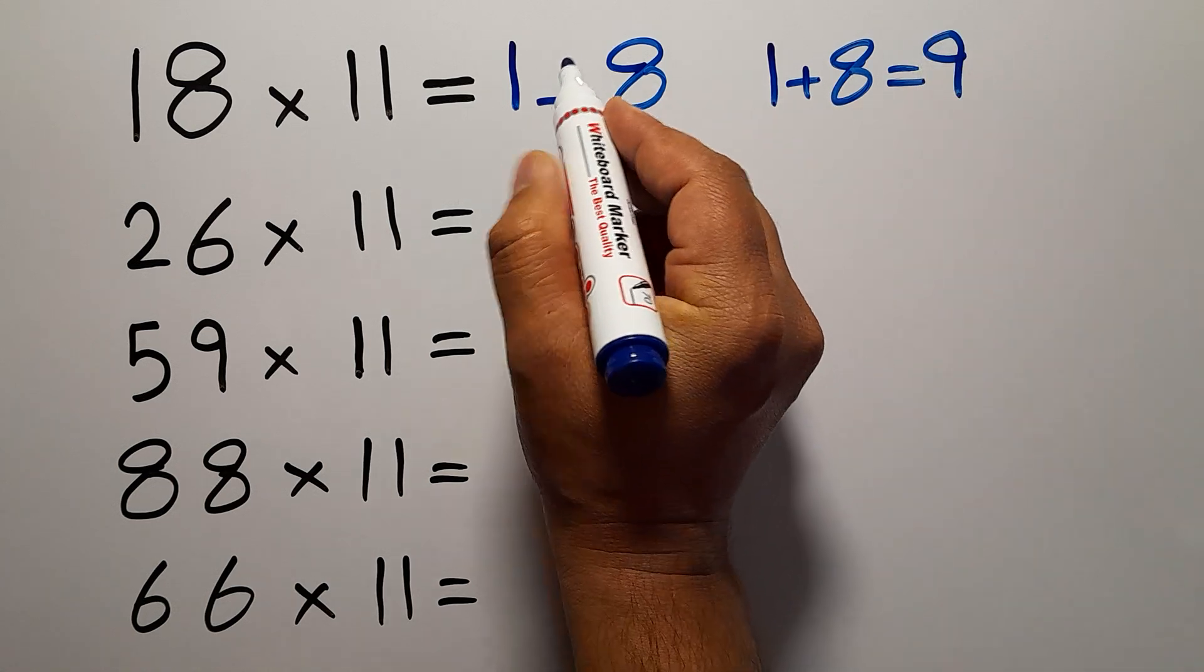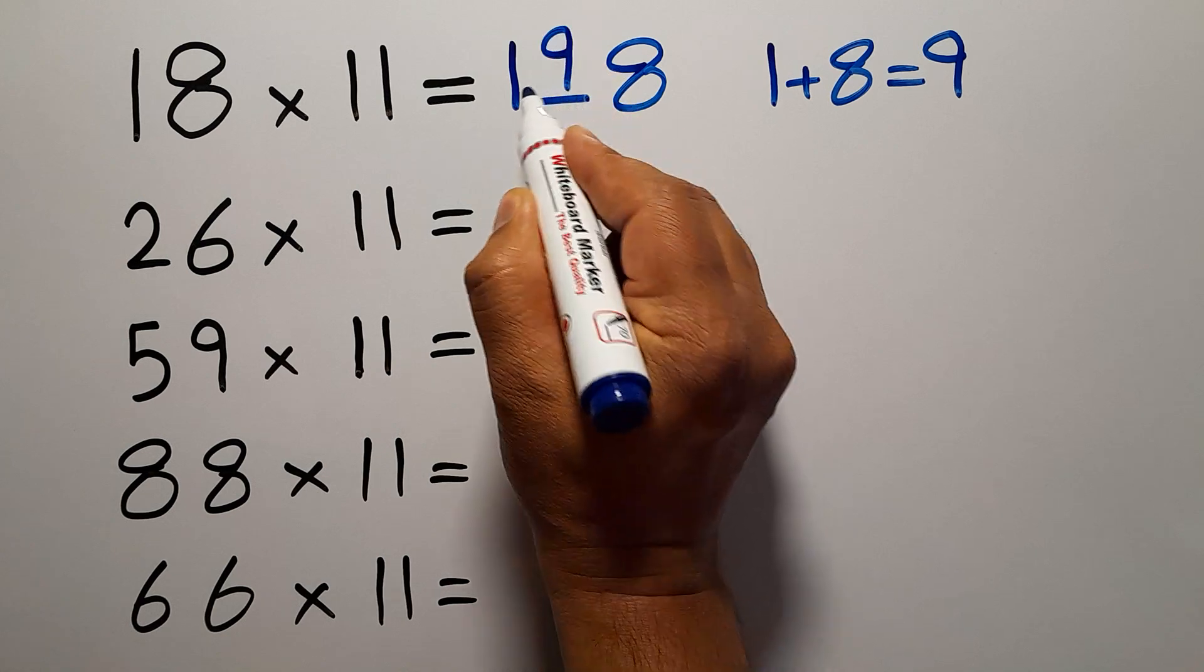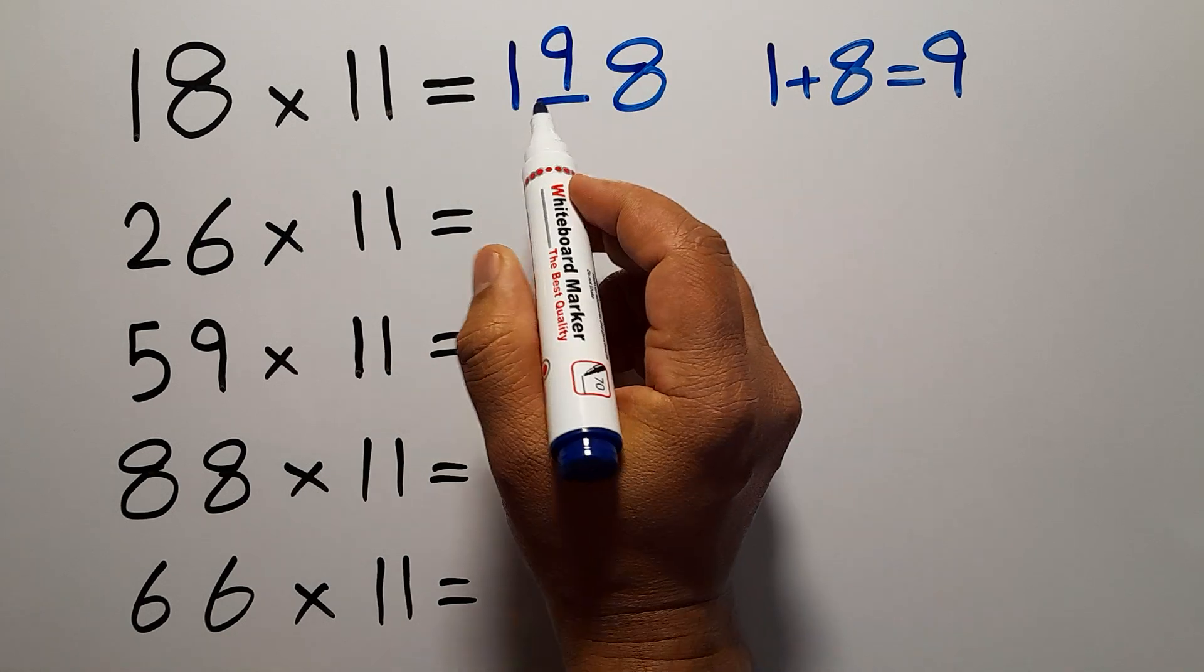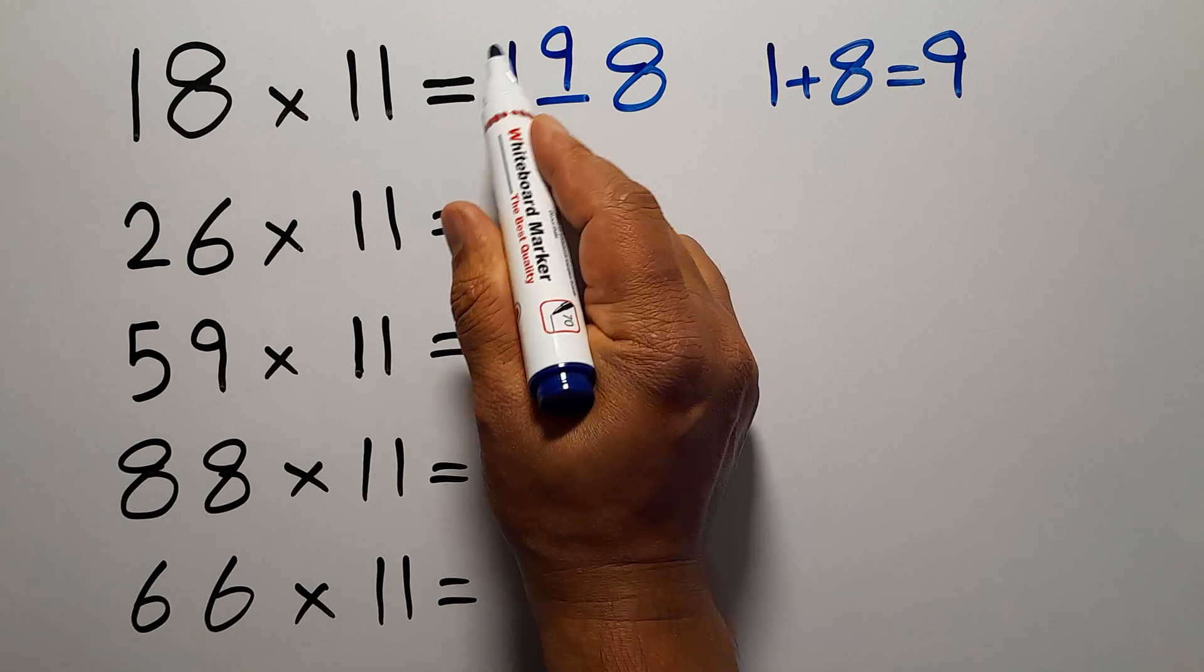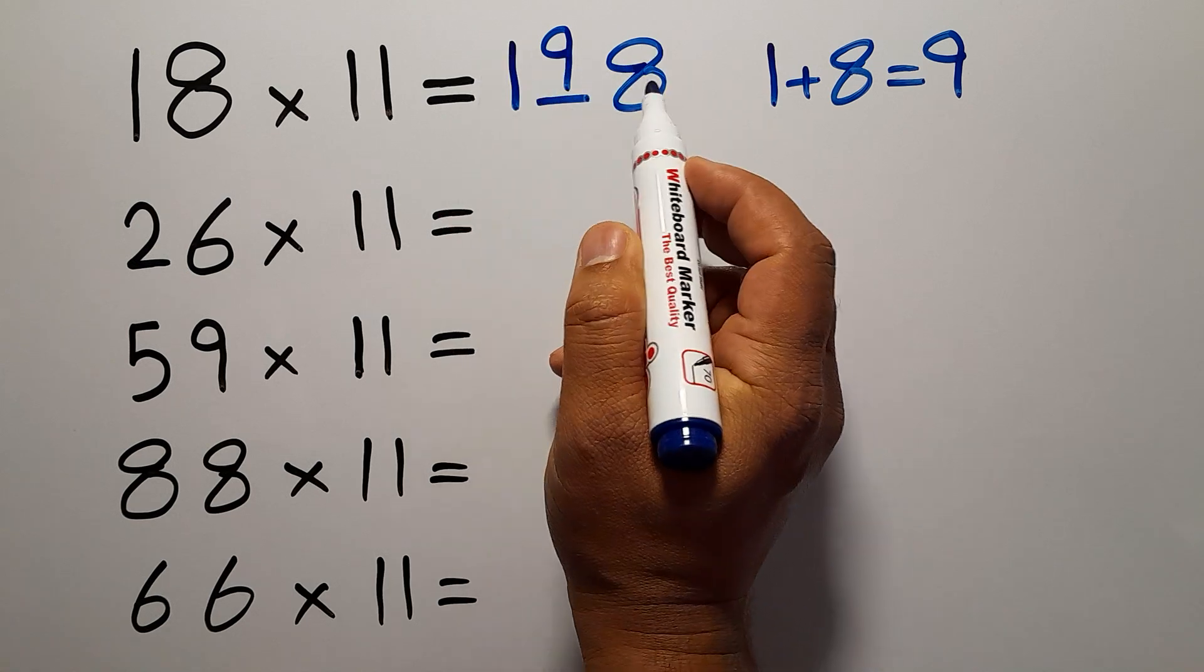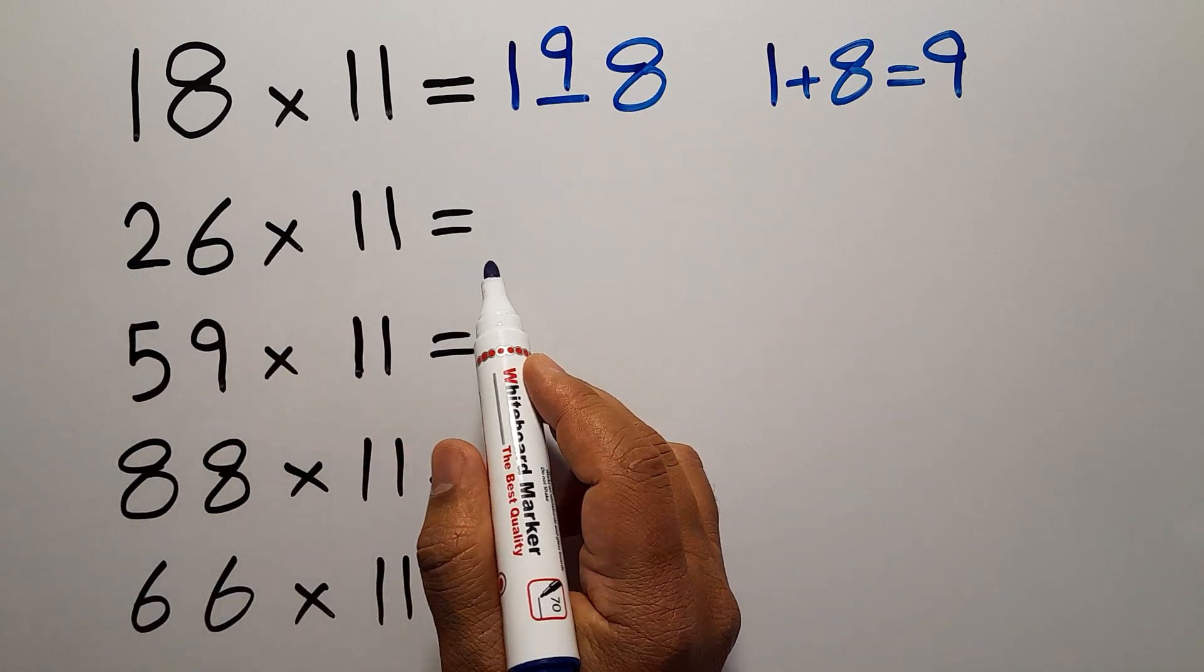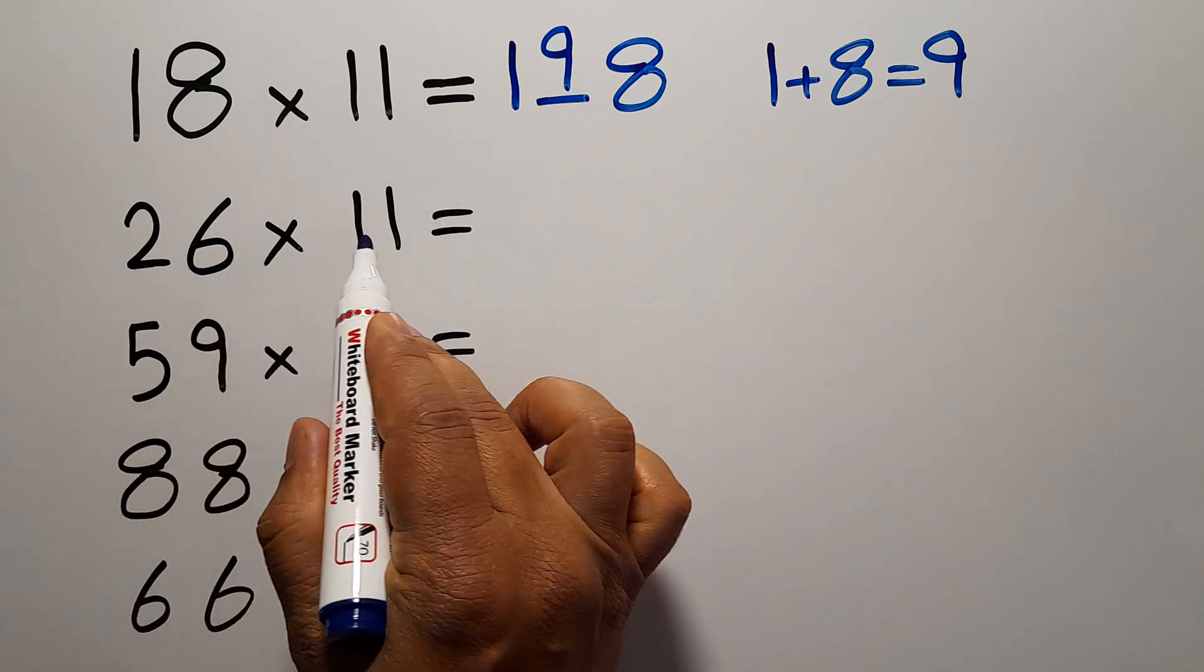And now we have to put this 9 here, so we have 198. That's it, the answer is 198. Now the second multiplication, 26 times 11.